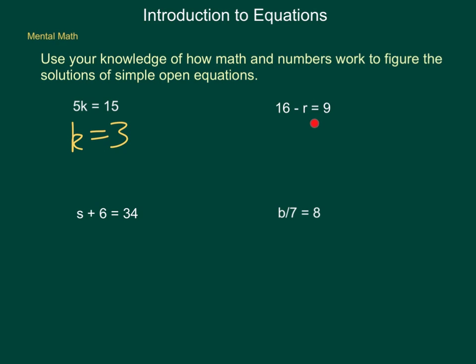Next one, 16 minus r equals 9. What do I subtract from 16 in order to get 9? We would conclude that r would have to equal 7. After that, s plus 6 equals 34. What number plus 6 would give us 34? We would have s equaling 28. And last, b divided by 7 is 8. What number can I divide by 7 to get 8? We would conclude that b is 56.